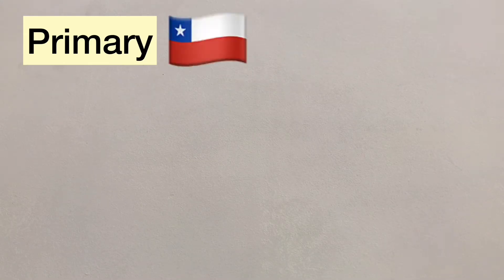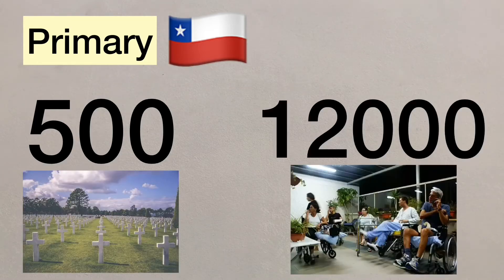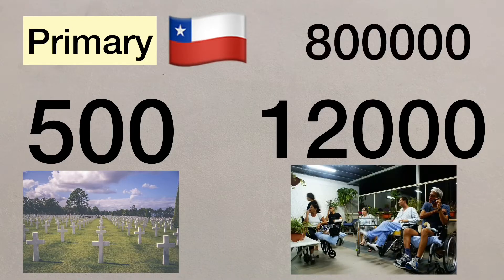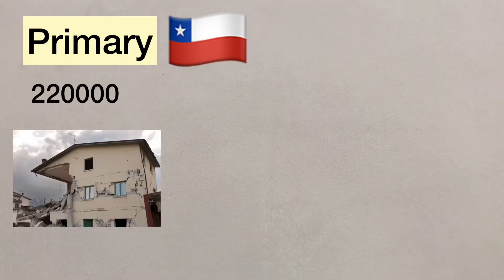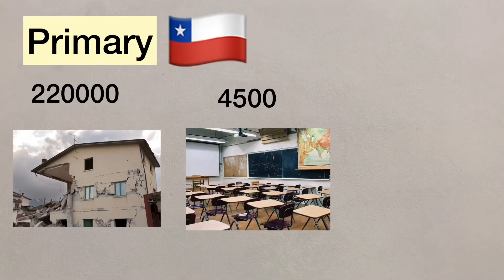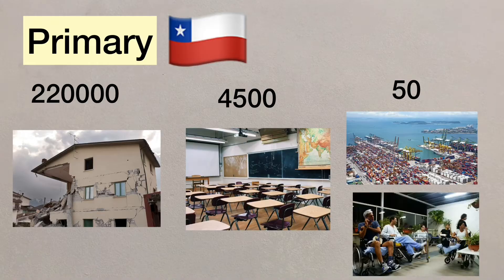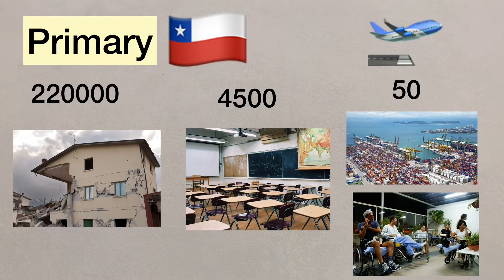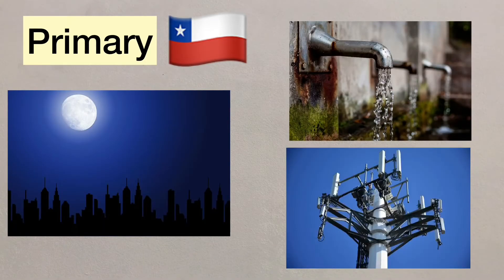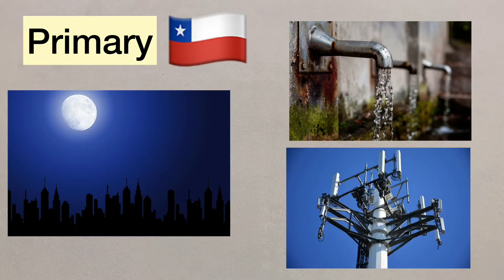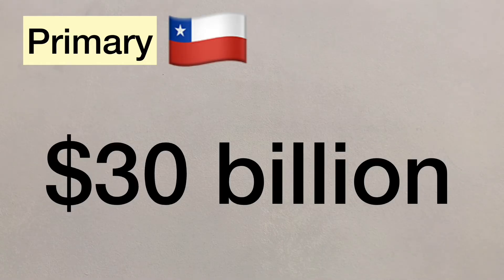In Chile the primary effects included around 500 people killed and 12,000 injured with 800,000 people affected. 220,000 homes, 4,500 schools and over 50 ports and hospitals were destroyed. Ports and airports were badly damaged. Large areas of Chile lost power, water supplies and communications. The cost of the earthquake was estimated at around 30 billion US dollars.